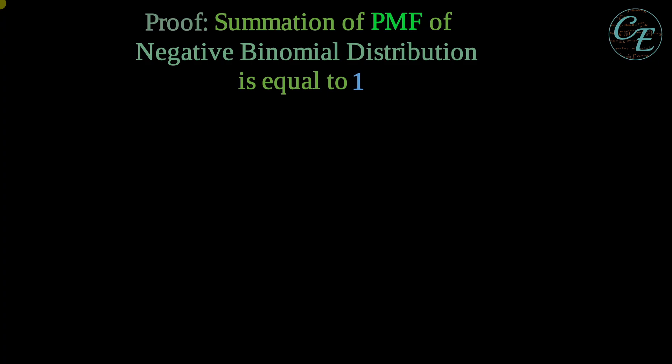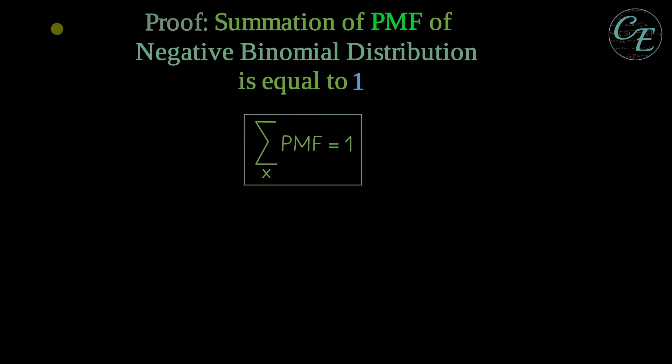Hello everyone. In this video I'm going to show you how to prove that the summation of the PMF of the negative binomial distribution is equal to 1. In symbol, we will prove this. The PMF here is for the negative binomial distribution. It will be summed within the support of its random variable and we will prove it to be equal to 1.